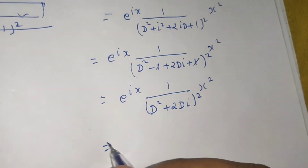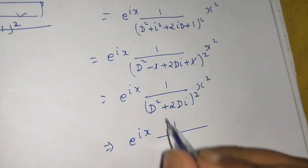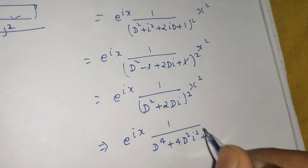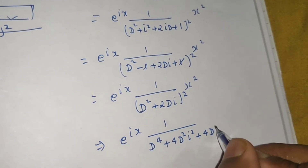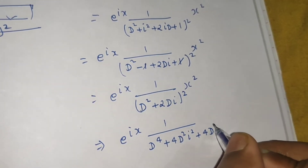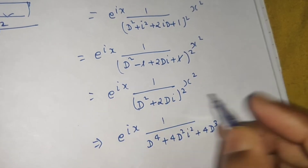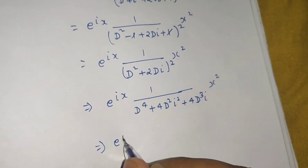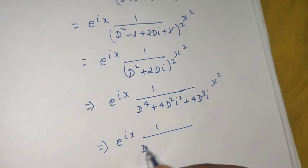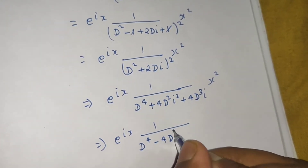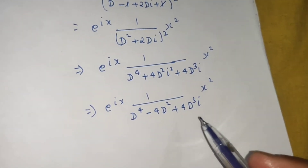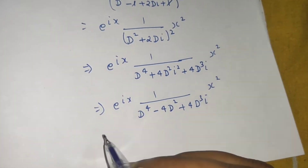Expanding (D² + 2Di)² gives D⁴ + 4D²·i² + 4D³·i = D⁴ - 4D² + 4D³·i. So the expression is e^(ix) · 1/(D⁴ - 4D² + 4D³i) operating on x². For x^n, the rule is to take out the lowest degree term, which here is -4D².